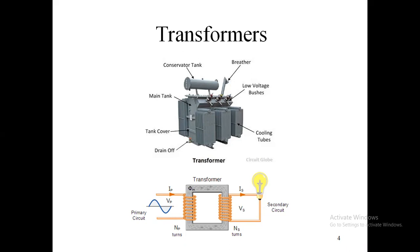Looking at the basic structure of the transformer, we can see the conservator tank, the breeder, and the low-voltage bushings from where we take the low-voltage supply. The main tank contains the transformer windings along with the transformer oil and accessories. There are cooling fins used to cool the transformer oil when it gets heated, and a drain-off used when maintenance work needs to be done to remove the oil.